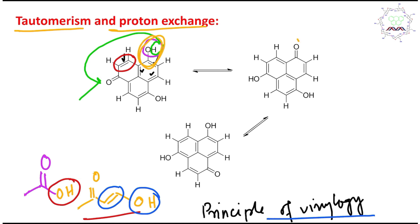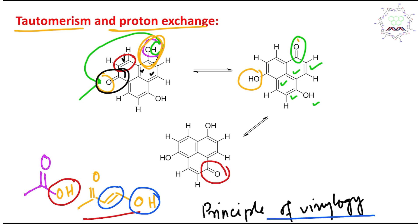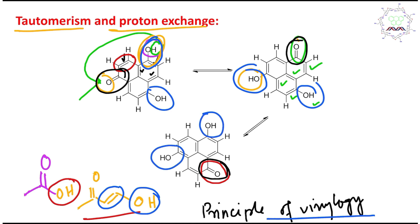Through tautomerism, the OH group is converted into a ketone and the adjacent part becomes the enol. The same is true for the other canonical form — conjugation can result in proton shifting and the carbonyl position moving. So at one time the carbonyl is here, another time it is there, and yet another time it is in a third position. From these three canonical forms, we conclude that the carbonyl and hydroxyl groups are present at the same positions.